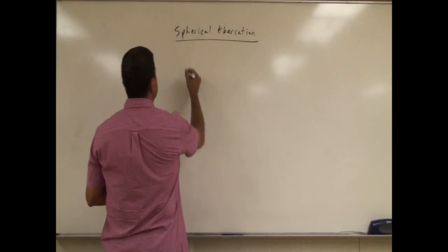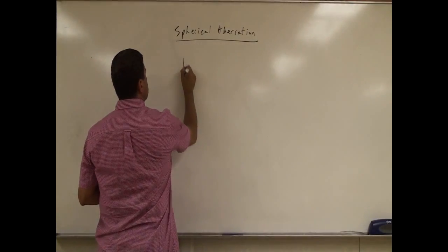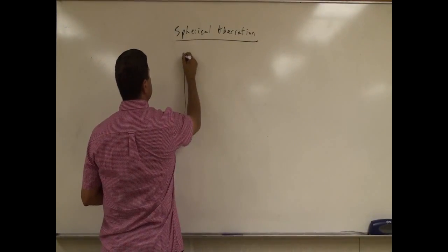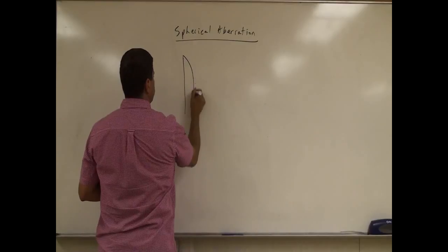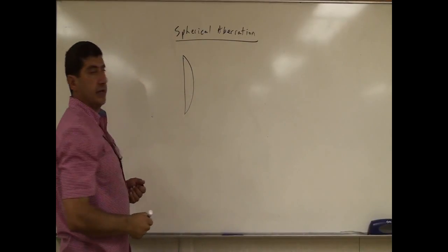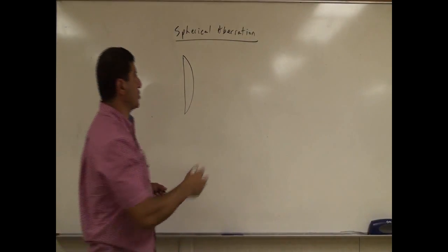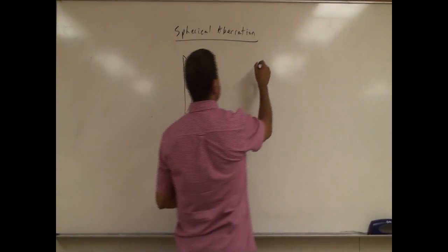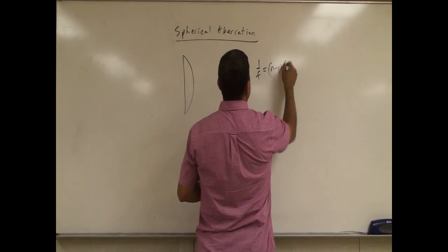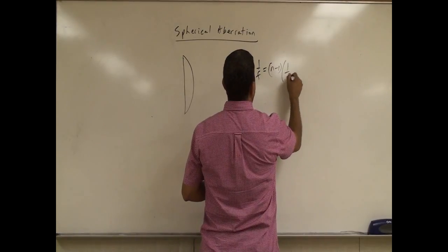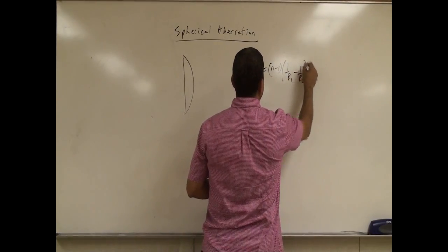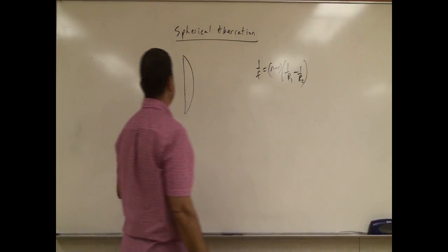So let's assume here that you have a plano-convex lens. Remember, the equation for a lens is given by 1 over f equals n minus 1, times 1 over r1 minus 1 over r2.